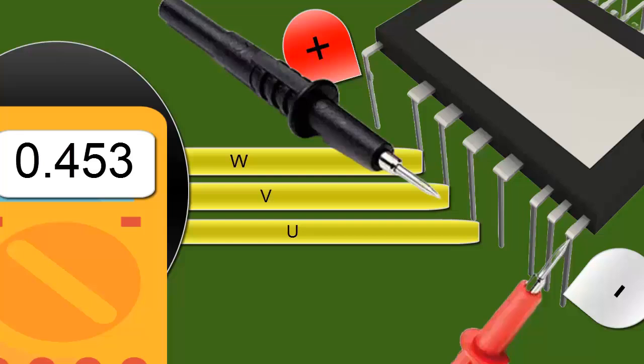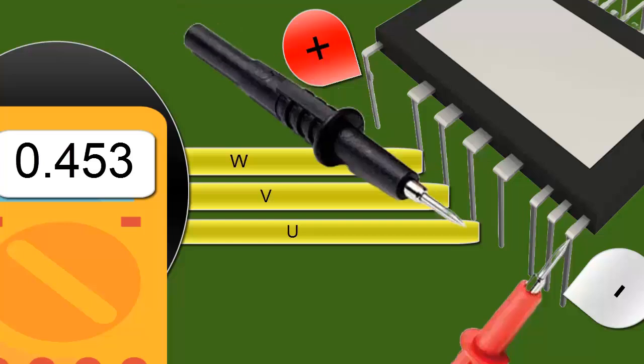The minimum voltage activation values should be similar to those obtained previously. The measurement obtained between the negative supply and each pin U, V, W should yield practically the same reading.